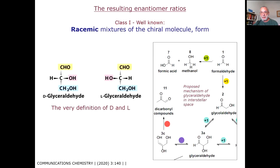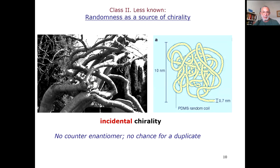What can we say about the ratio between the two enantiomers of chiral molecules formed through increased complexity? There are two cases. The first, well known to all of you, is that if you form a chiral molecule, you get a racemic mixture of the two enantiomers — for example, the formation of glyceraldehyde, which is the very definition of what is D and what is L from interstellar space. The second case, less known, is randomness as a source of chirality. That tree is of course chiral because it doesn't have a reflection mirror — we should call it incidental chirality.